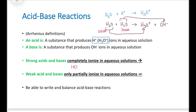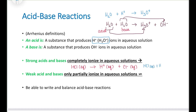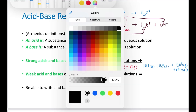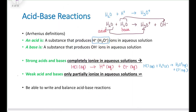You could also write HCl plus water giving you H3O+ and Cl minus — same thing, but it completely dissociates, completely ionizes. We have no more HCl present; we only have H+ ions and Cl minus ions present in solution. Weak acids and weak bases, however, only partially ionize in aqueous solution.